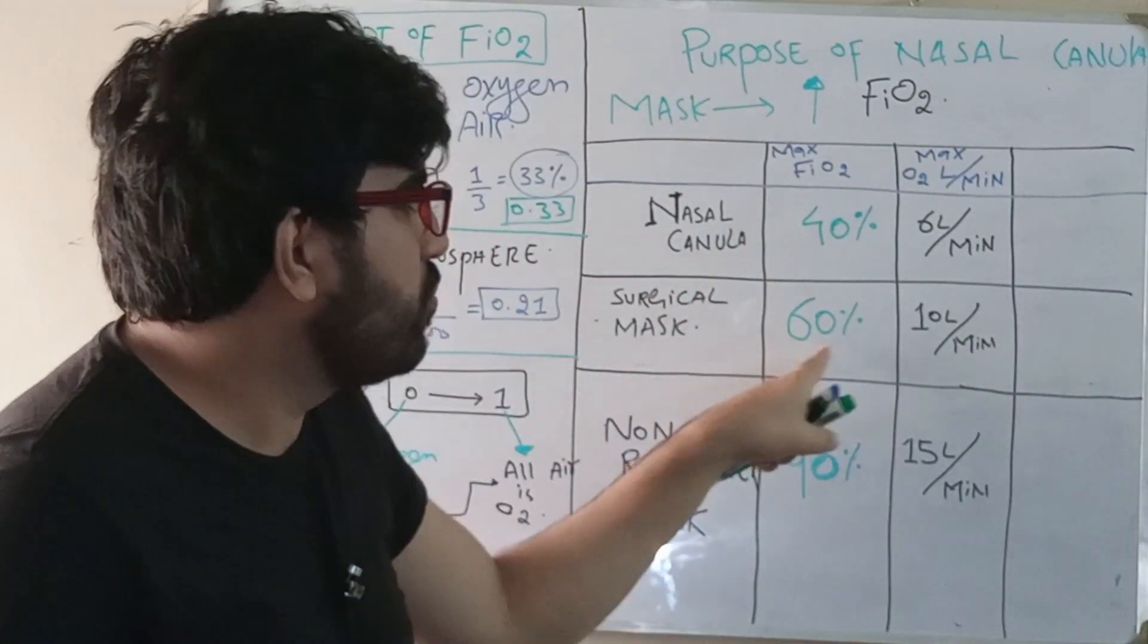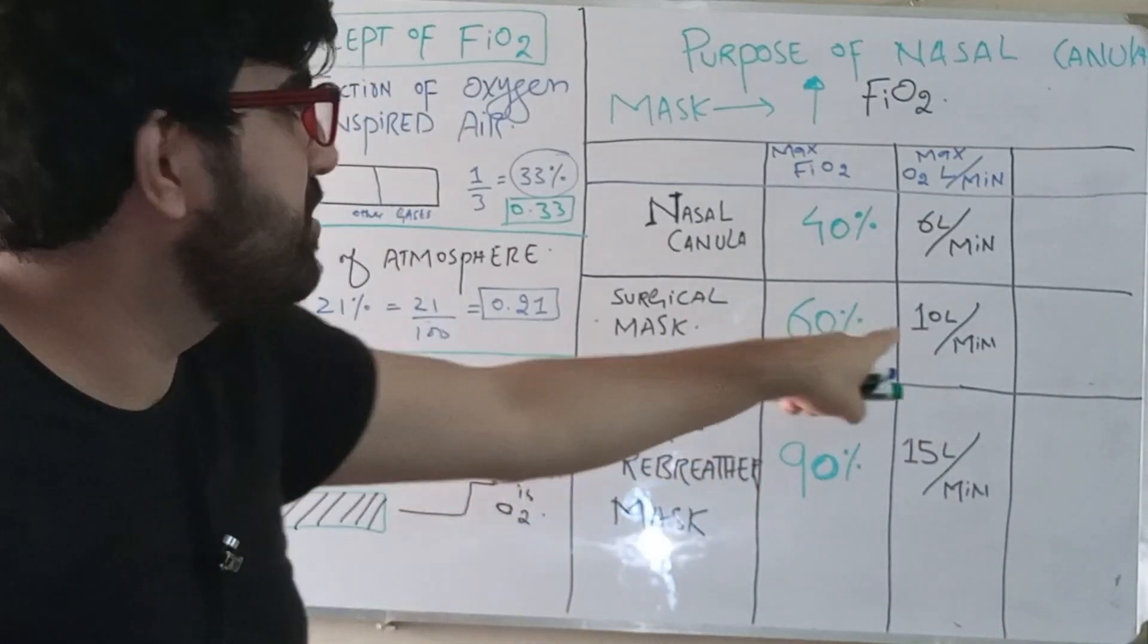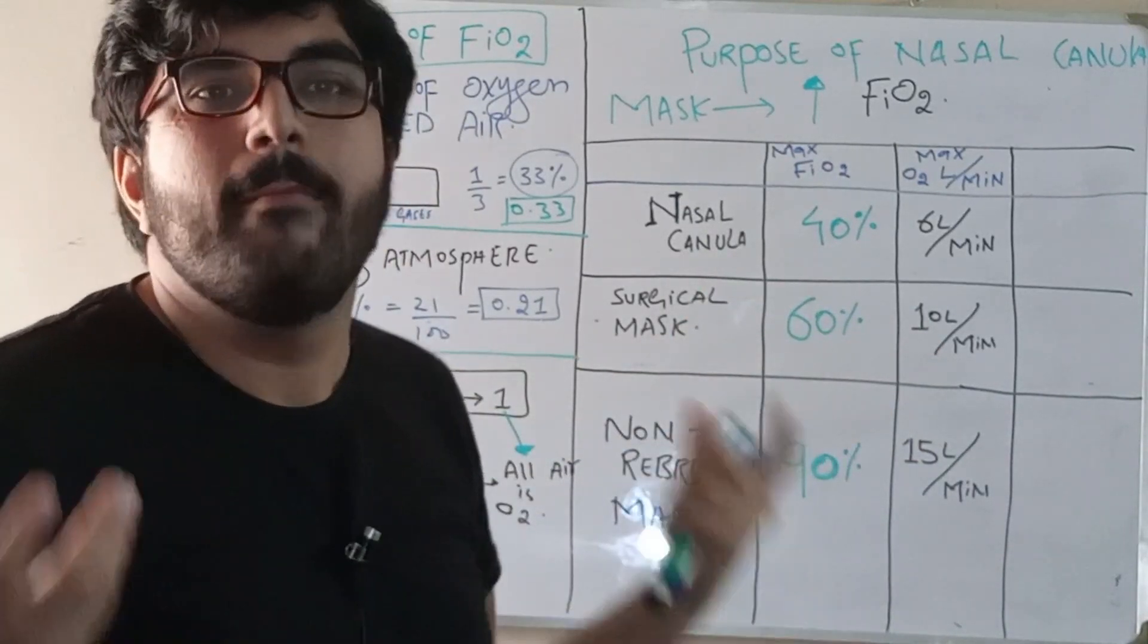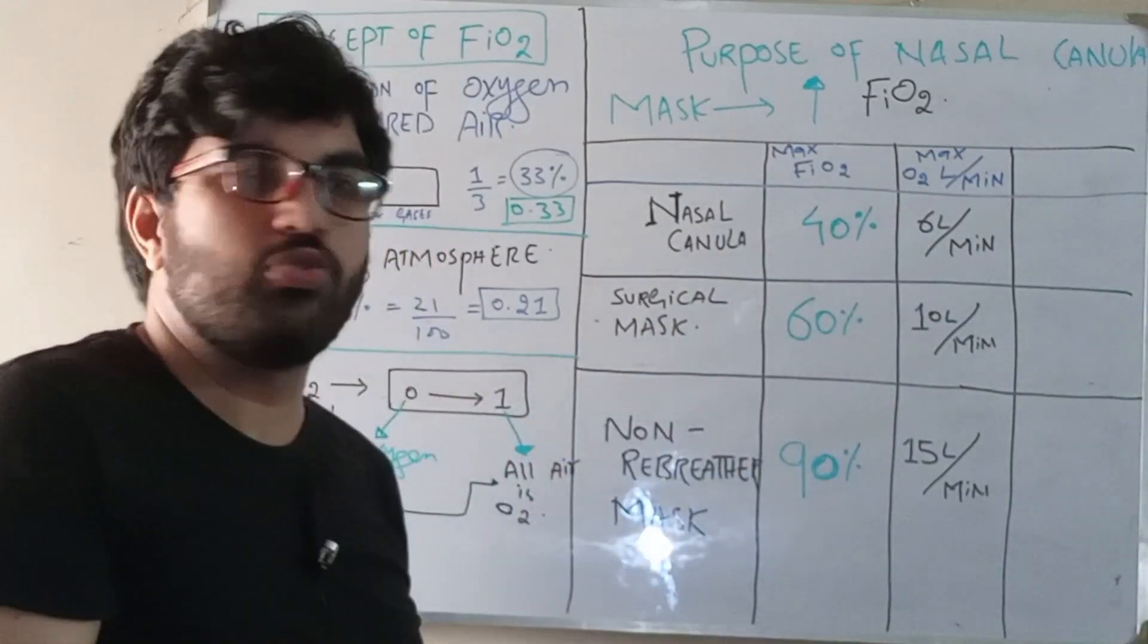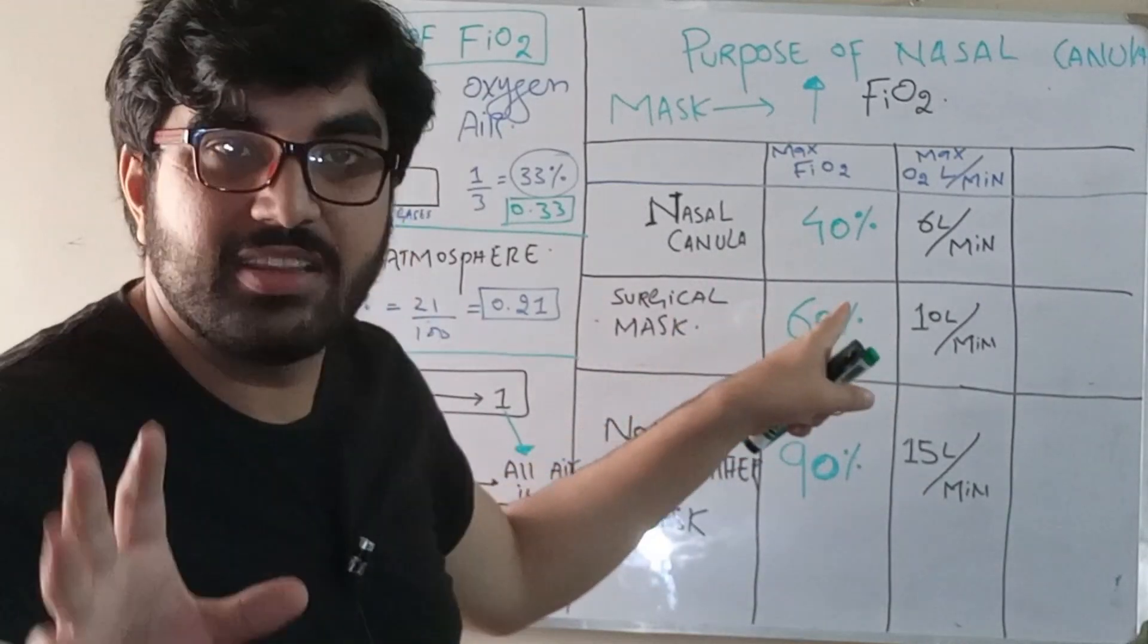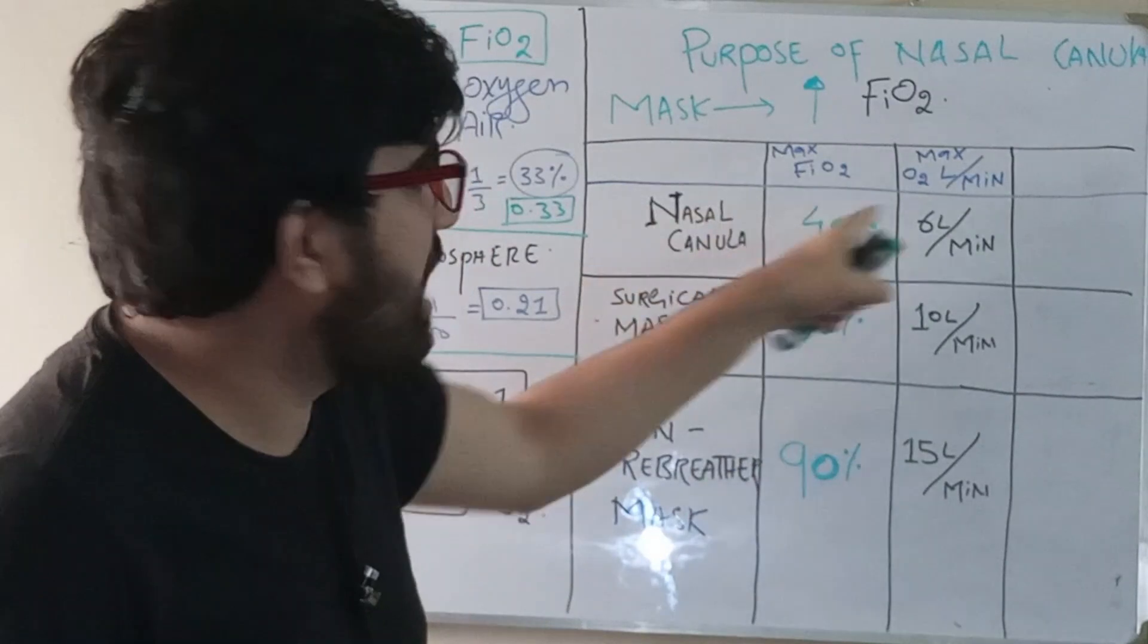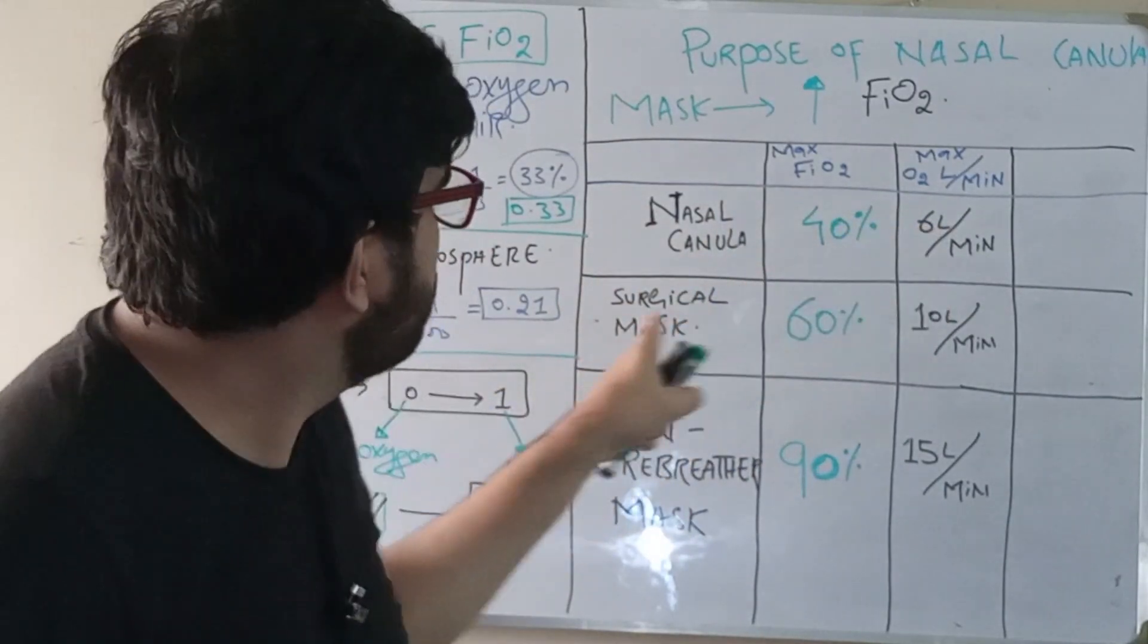And you can give up to ten liters per minute, not more than that, because there will be no extra benefit - you are already giving the maximum FiO2 at the given amount of oxygen. Still the patient is not achieving the target. What is the next step? Patient was hypoxemic.